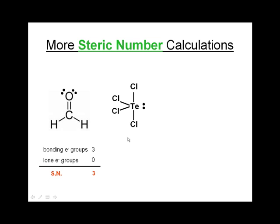Here's another interesting example. Let's look at the tellurium atom, which is the central atom in the TeCl4 molecule. There are four bonding electron groups and one lone electron group, which adds up to give a steric number of five. This is similar to what we saw with NH3 — there's one lone electron group — but I wanted to use this example to show a case in which the steric number is higher than four.